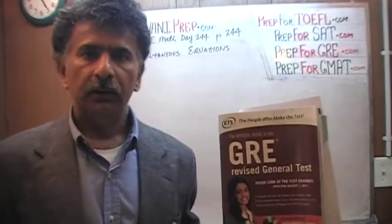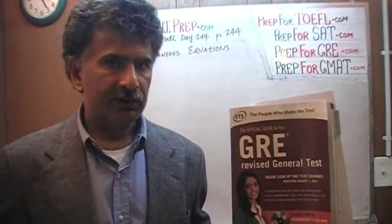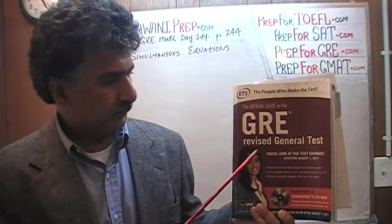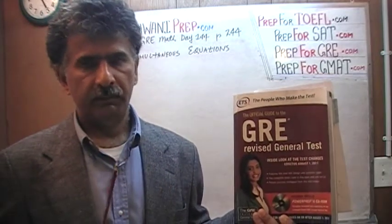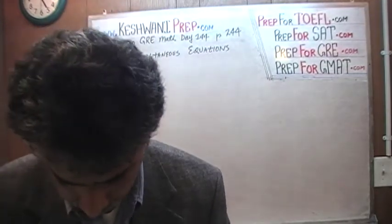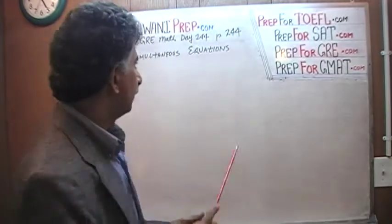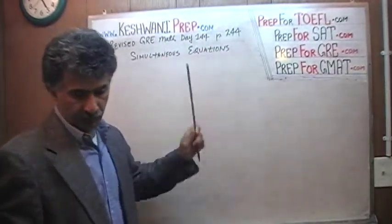We are here because we want to prepare for the GRE. We have been solving GRE math problems out of this book here — the official guide to the GRE, the revised general test. If you do not own this book already, purchase it immediately. You are going to need it. The problem we are about to solve is on page number 244. Today is our lesson number 144. Let's turn to page 244, problem number 7, 7C.